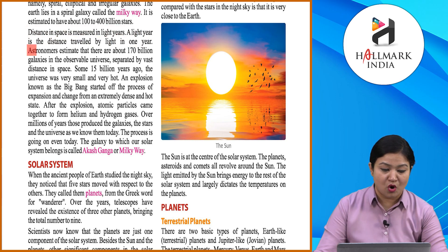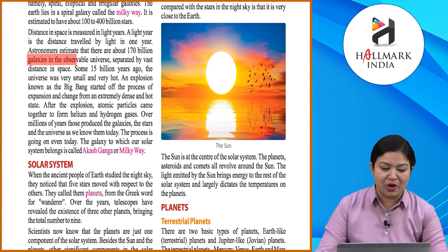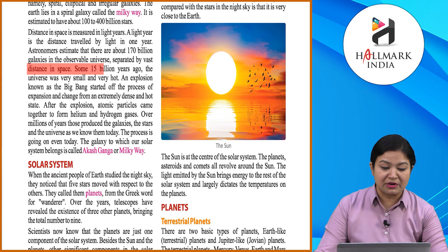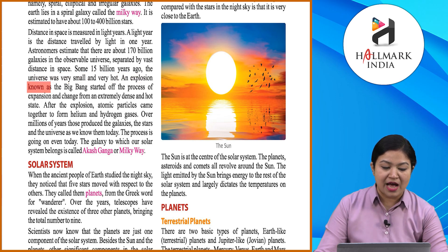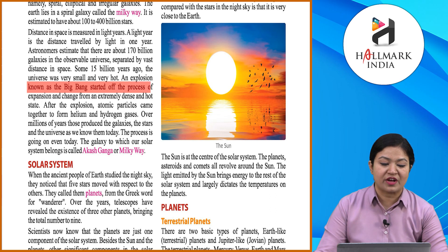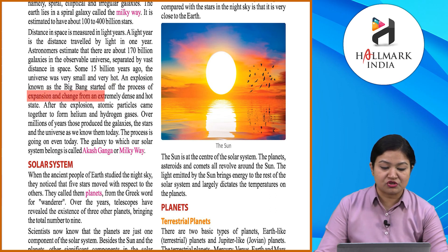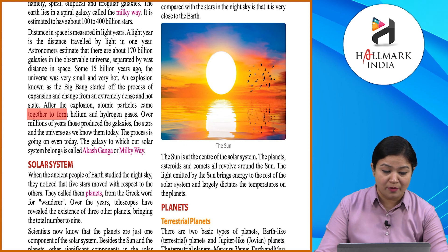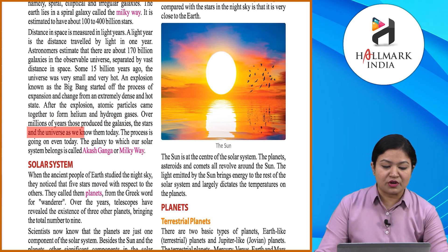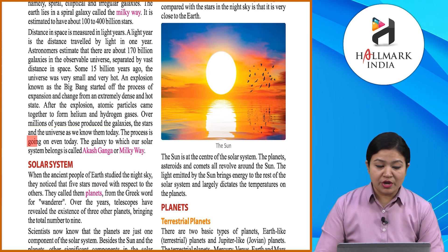A light year is the distance traveled by light in one year. Astronomers estimate that there are about 170 billion galaxies in the observable universe. Some 15 billion years ago, the universe was very small and very hot. An explosion known as the Big Bang started the process of expansion. After the explosion, atomic particles came together to form helium and hydrogen gases, which over millions of years produced the galaxies, stars, and the universe as we know today.